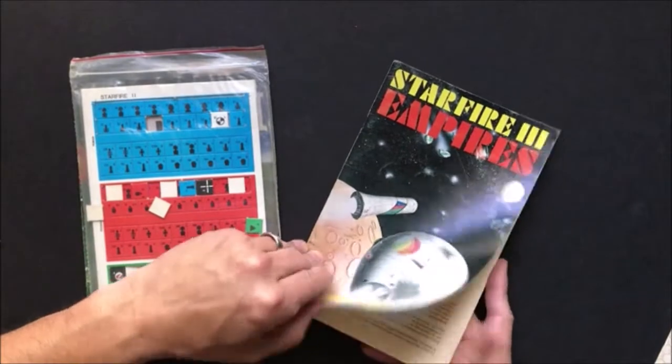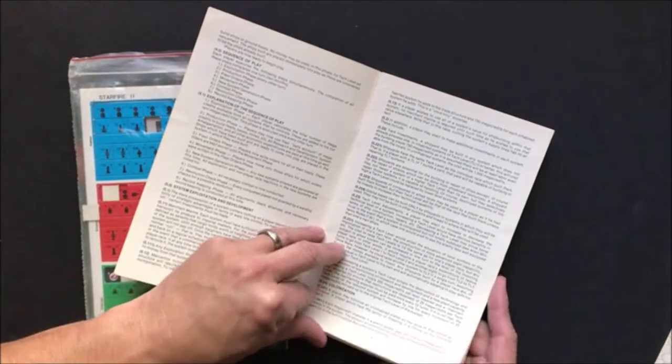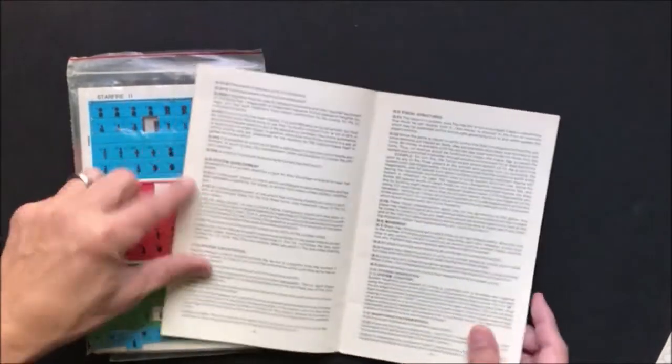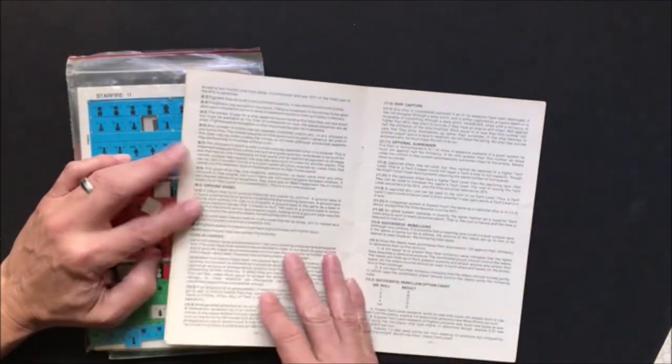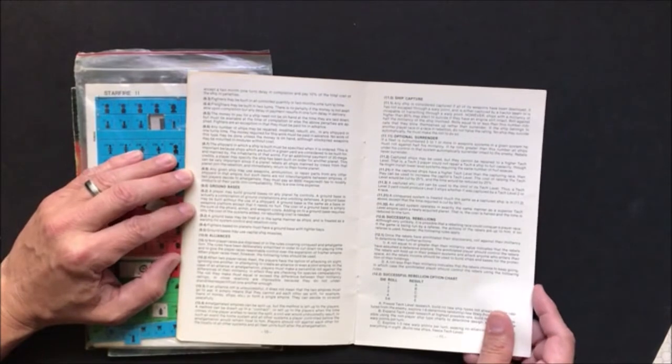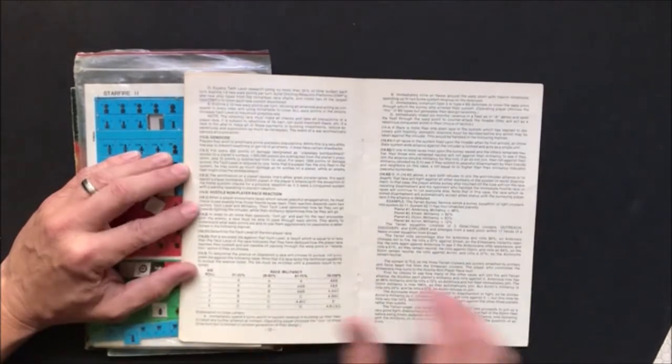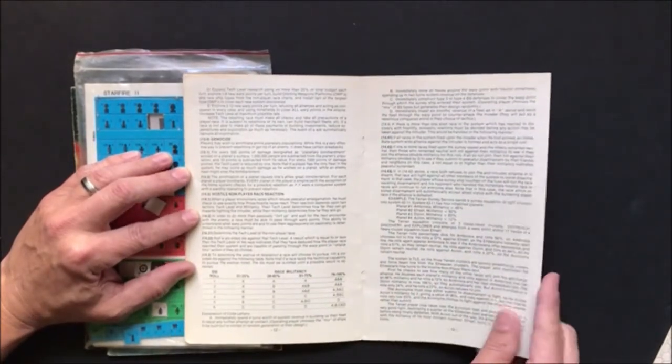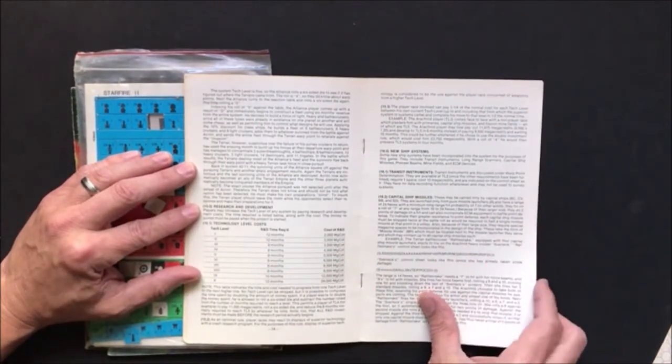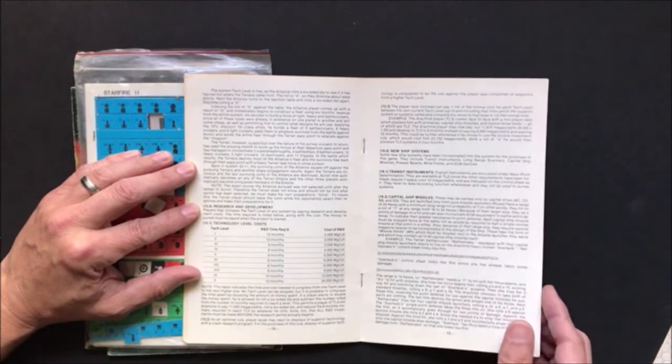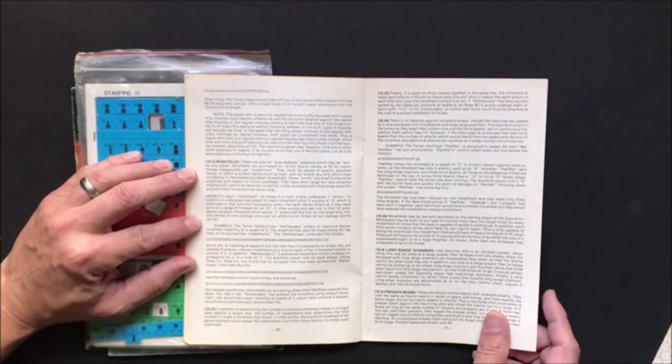Starfire Three Empires is basically a strategic game. It adds shipyards, ship construction so you can build up your fleets, planetary populations, rules about rebellions and surrenders, ship capture, ground bases, alliances, hostile non-player race reactions, some new ship systems to deal with strategic movement, minefields.